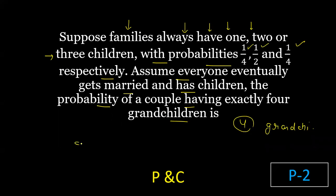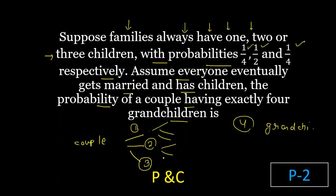This couple has married and can have one, two, or three children. Then each child can also have one, two, or three children. Now we will find the probability of eventually getting exactly 4 grandchildren for this couple.